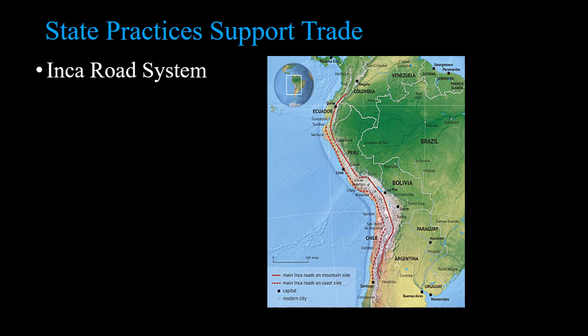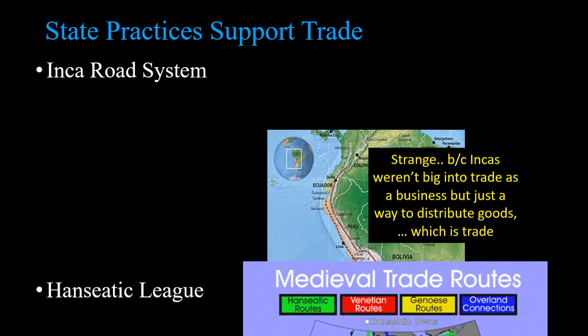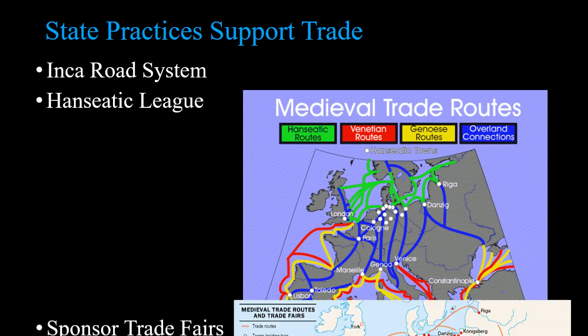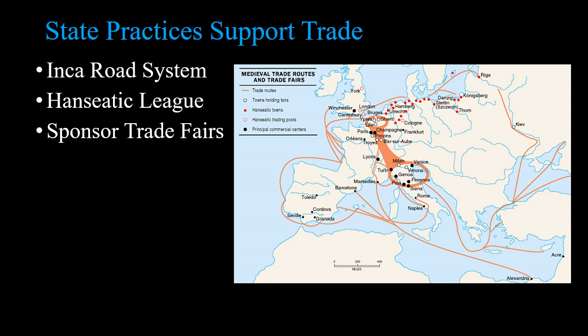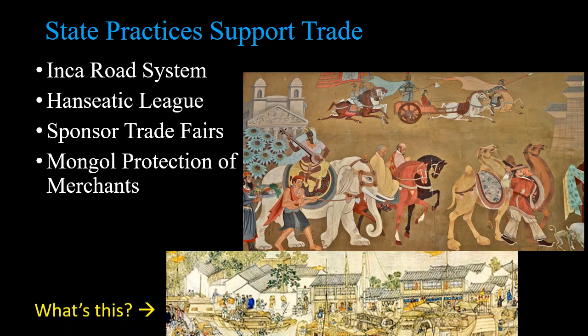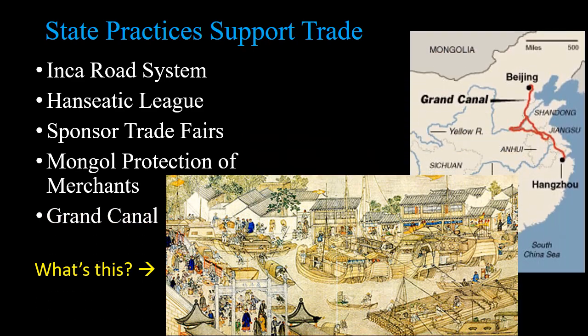What is the state doing to support trade? In some areas they build road systems. You have political affiliations like the Hanseatic League in northern Europe. There are state-sponsored trade fairs. The Mongols tax merchants, realize merchants are very profitable, and so they protect them. China builds the Grand Canal, starting in the Sui Dynasty and continuing through the Tang and Song Dynasties, connecting the Yangtze and the Yellow Rivers for economic and political-military activities.